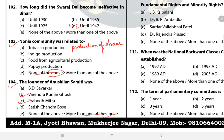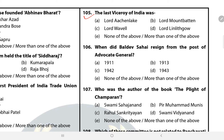Question 105: The last Viceroy of India was? The answer is B — Lord Mountbatten. Question 106: When did Baldev Sahi resign from the post of Advocate General? The answer is B — 1942.